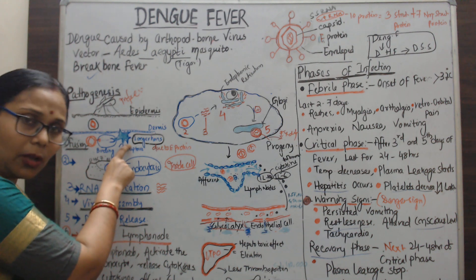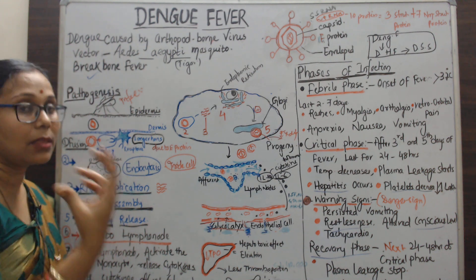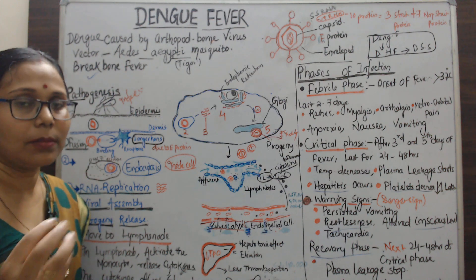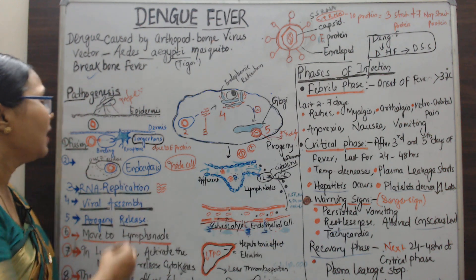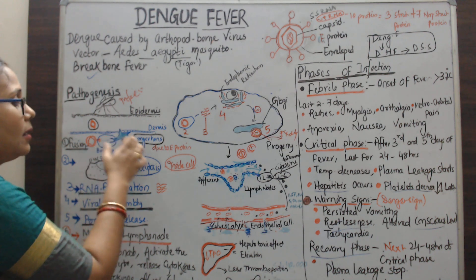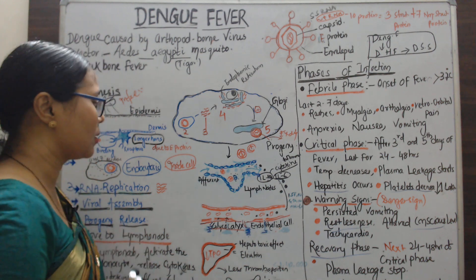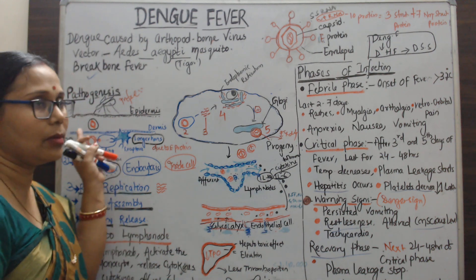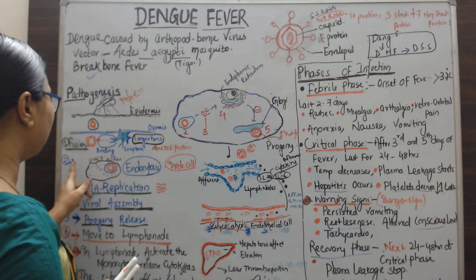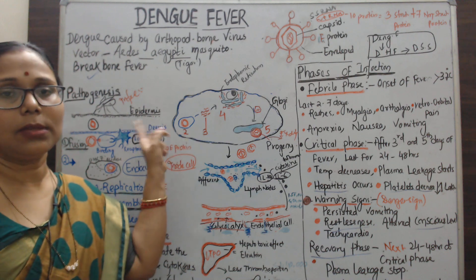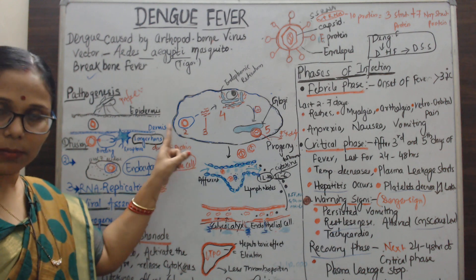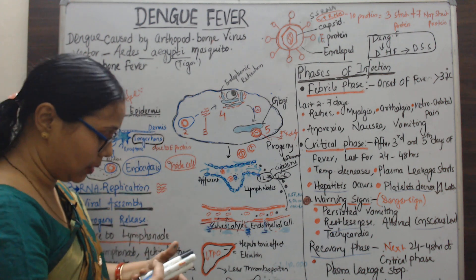The Langerhans cells in the dermis layer have a receptor site that attaches to the E proteins of the virus — this is called fusion or binding. After binding or fusion, the next step is endocytosis, meaning the virus will be entered into the cell, forming a vacuole.